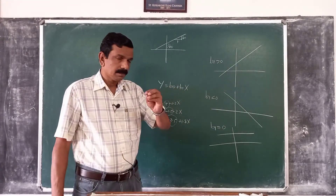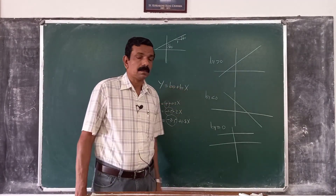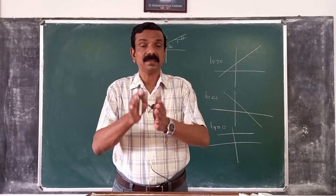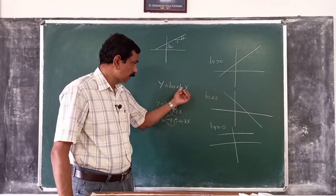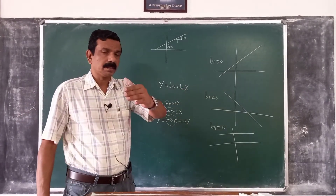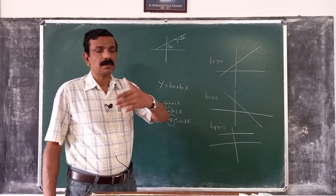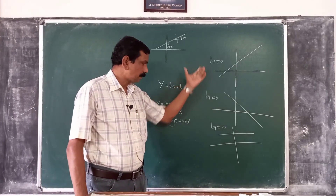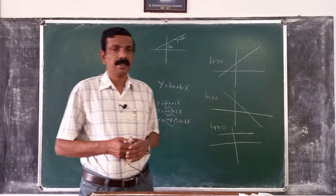Our aim in linear regression is to estimate the constants b0 and b1 in order to understand the nature of the relationship between y and x. If b1 is positive, when x increases, y also increases. If b1 is negative, when x increases, y decreases. If b1 is 0, y remains constant. We have to explore these possibilities to study the nature of the relationship between y and x.